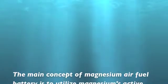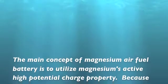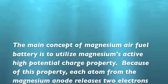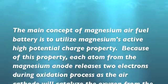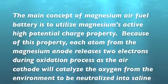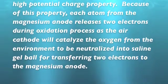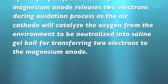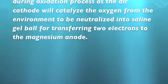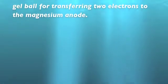The main concept of magnesium air fuel battery is to utilize magnesium's active high potential charge property. Because of this property, each atom from the magnesium anode releases two electrons during the oxidation process as the air cathode will catalyze the oxygen from the environment to be neutralized into saline gel balls for transferring two electrons to the magnesium anode.